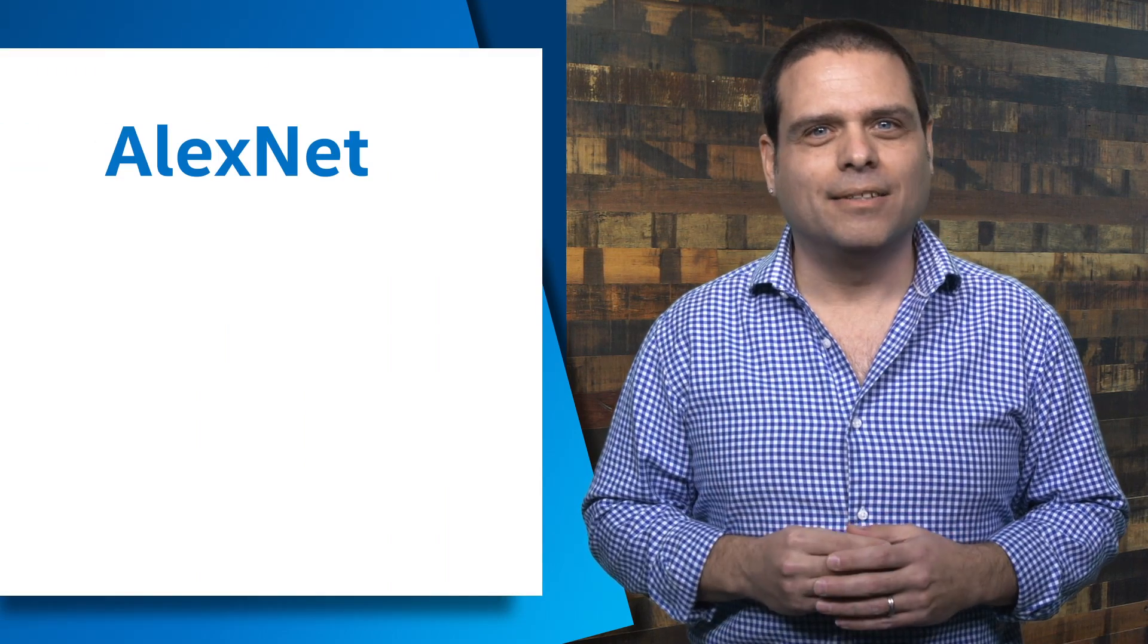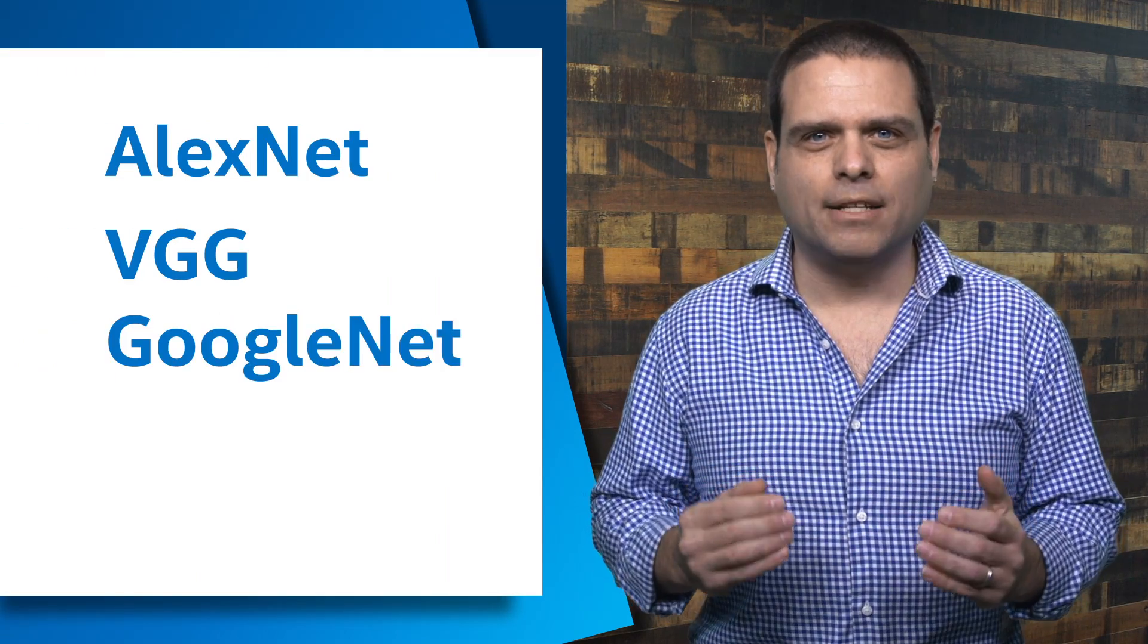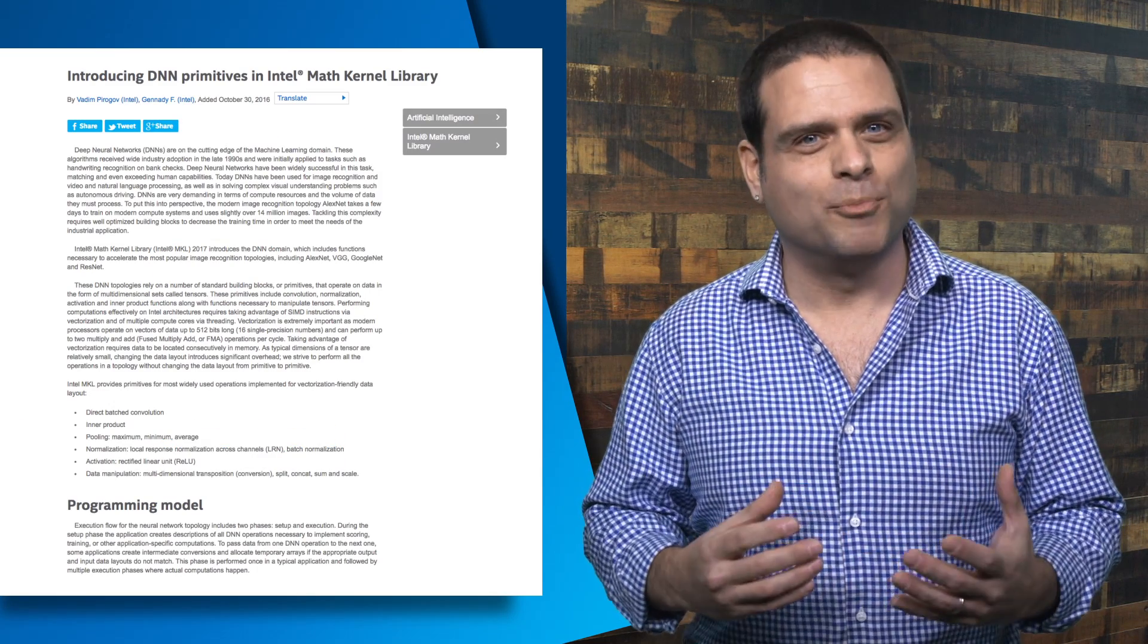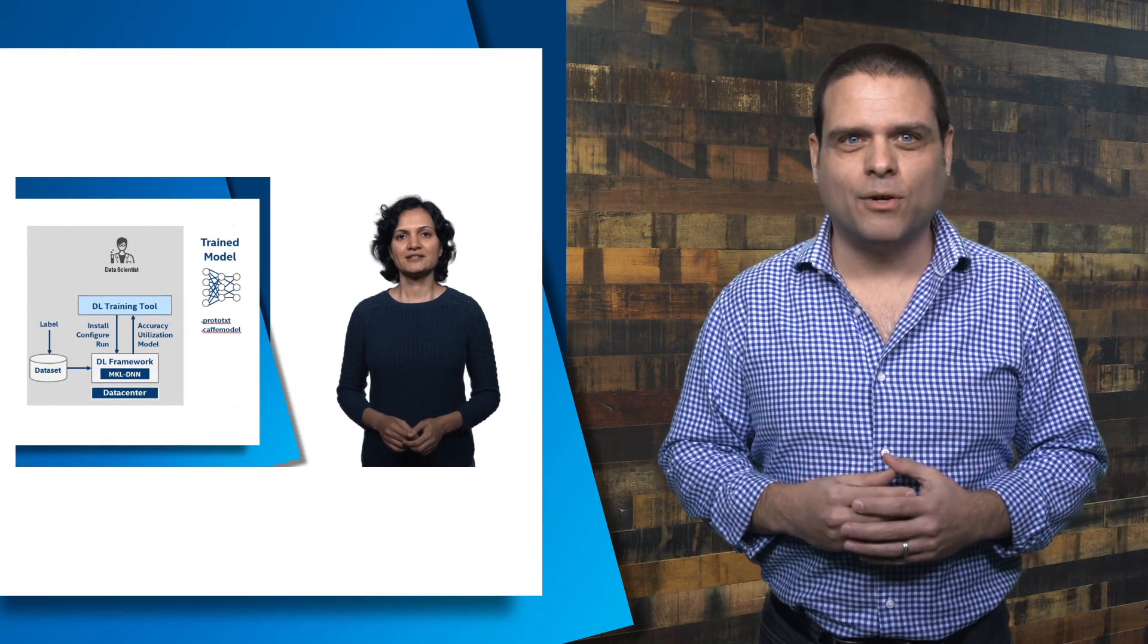Intel's Math Kernel Library 2017 introduces the DNN domain, which includes functions necessary to accelerate the most popular image recognition topologies. This includes AlexNet, VGG, GoogleNet, and ResNet. Take a look at this article in the link below to learn more.